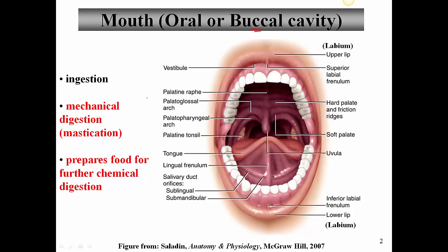Let's start with the functions of the mouth. One of the major functions of the digestive system is ingestion, and this is carried out by the mouth when we take in food. The other important function is mechanical digestion, which we term mastication — the same thing as chewing. Mastication prepares food for further chemical digestion by breaking it into smaller particles so that enzymes have more surface area to work with.